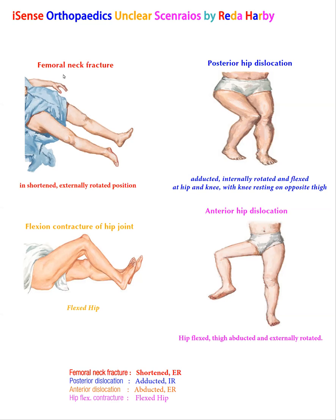The first scenario is femoral neck fracture. In femoral neck fracture, especially intertrochanteric fracture, you will find the limb in a shortened, externally rotated position. As you can see here, this side is apparently shorter and externally rotated, so you will select femoral neck fracture.